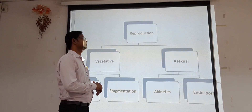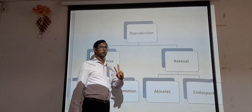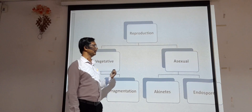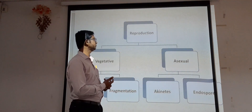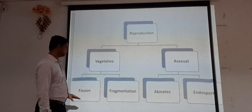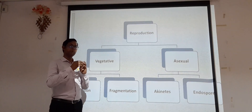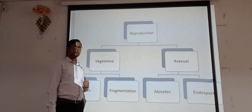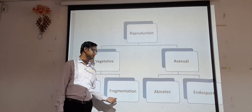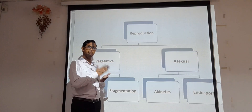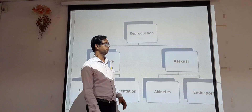Now moving to reproduction in Chlorophyceae. There are generally two types: vegetative reproduction and asexual reproduction, along with sexual reproduction. Vegetative reproduction is done by fission and fragmentation. In fission, one cell splits and two cells are produced from a single cell. In fragmentation, the vegetative structure breaks into fragments, each of which acts as a new plant body.